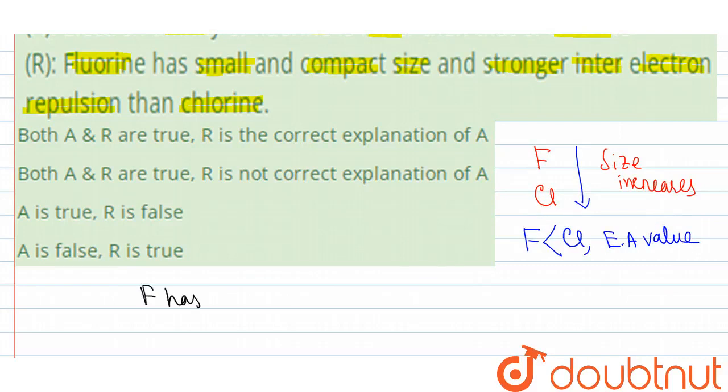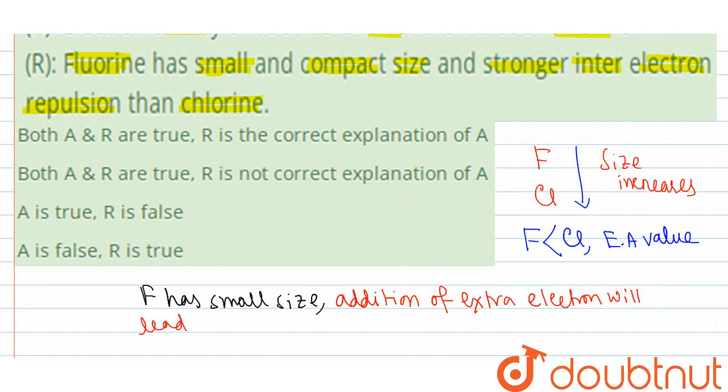fluorine has small size, so addition of extra electron will lead to strong inter-electron repulsion.